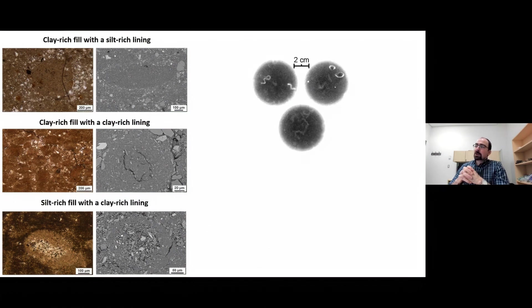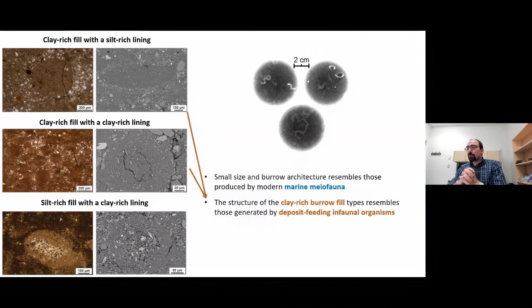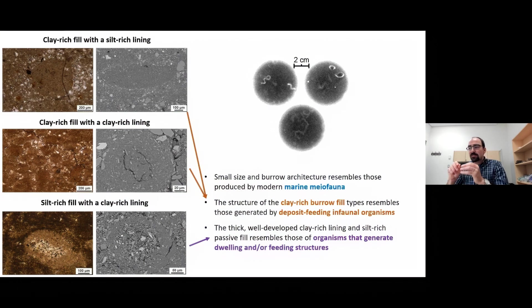Three burrow types were recognized in the succession. Also important to note is that along bedding parallel sections, the architecture of these burrows consists of sinuous forms, as you can see in these CT scan images. The different types of burrow fills, their size, which is a few tens to several hundreds of micrometers, as well as their architecture, resemble those produced by modern marine meiofauna. Meiofauna simply refers to small organisms between 0.045 micrometers to a thousand micrometers. The structure of the clay-rich burrow fills resembles those generated by deposit feeding infaunal organisms, whereas the distinctive well-developed clay-rich lining and the passive fill resembles those of organisms that generate dwelling or feeding structures.